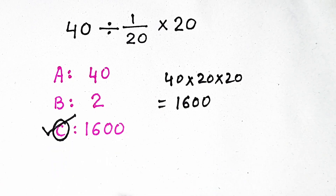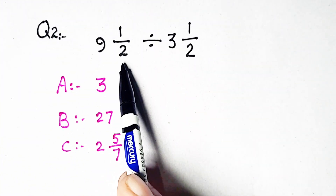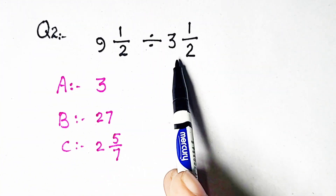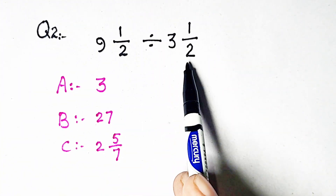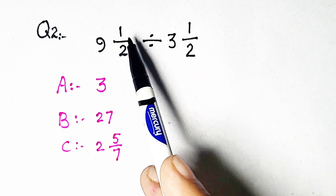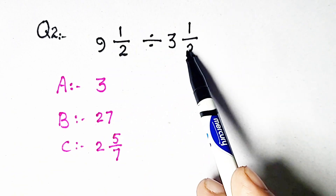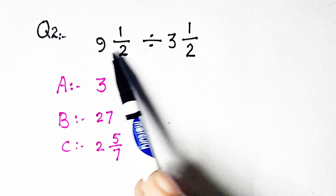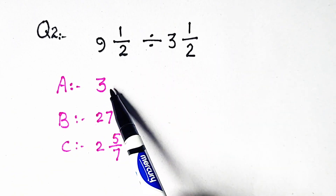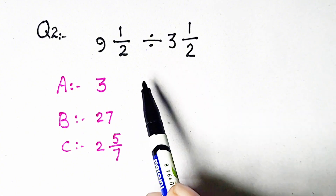Now come to the second question. Question 2 is 9 whole 1/2 divided by 3 whole 1/2. Mostly, students cancel the 1/2 — where 1/2 is cancelled, 9 divided by 3 gives 3 — but that is wrong.